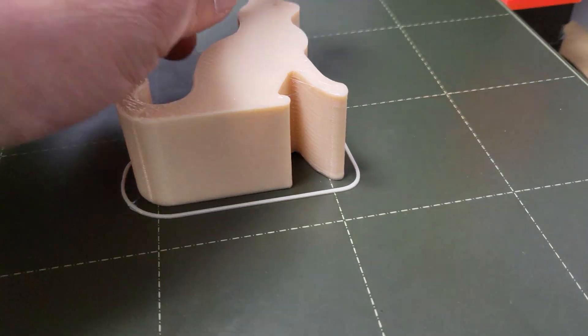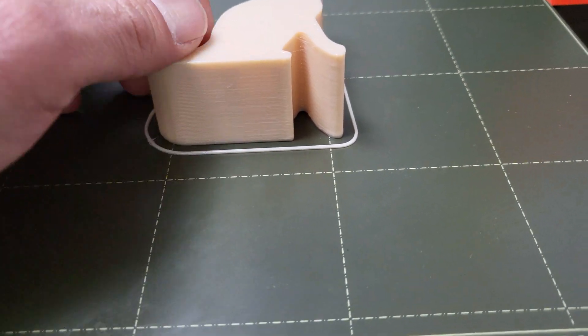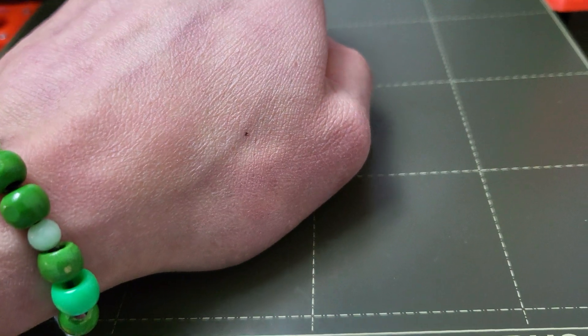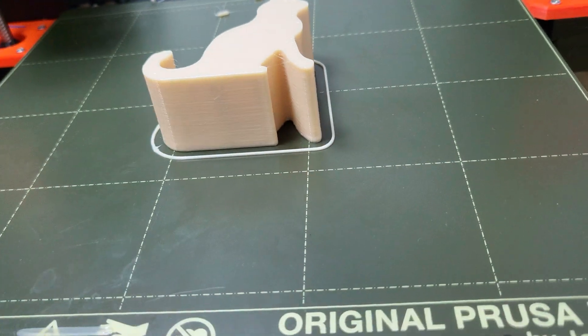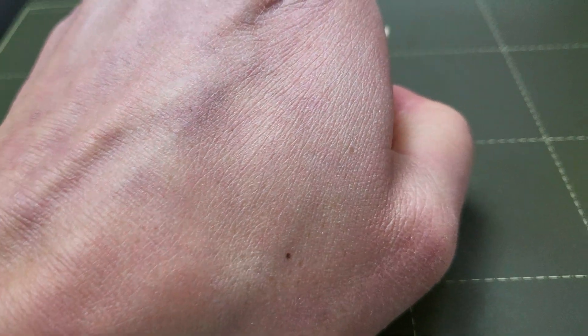So guys, my first ever 1mm nozzle on the Prusa MK3S Plus on TPU material came out actually pretty damn good.